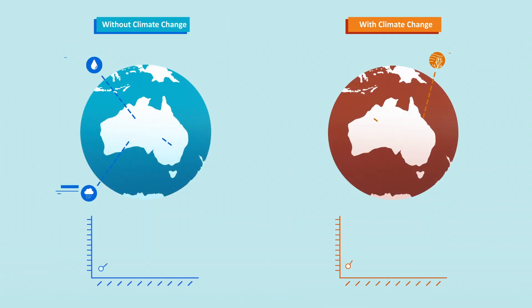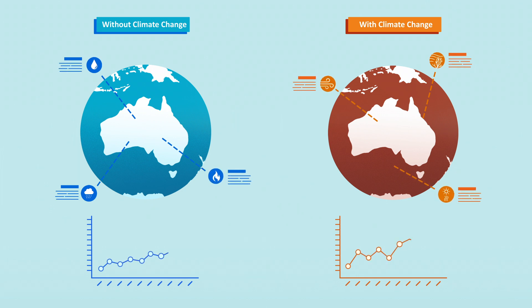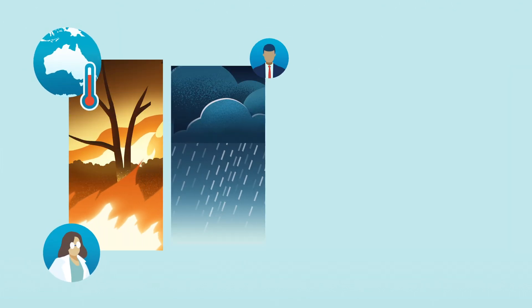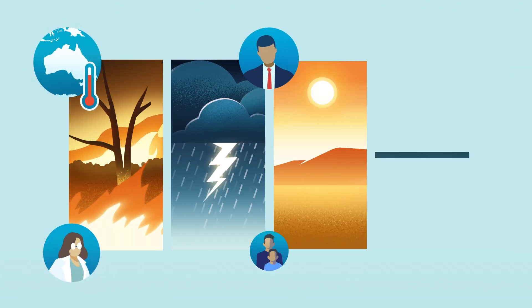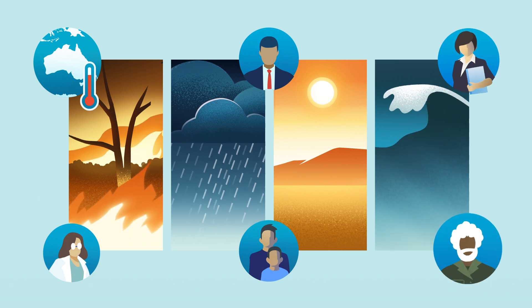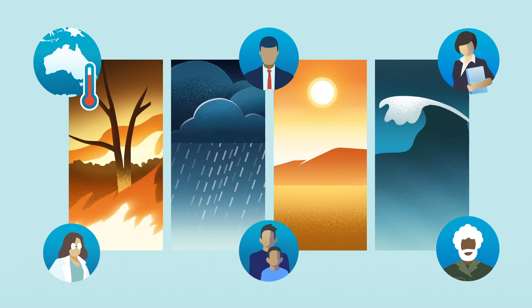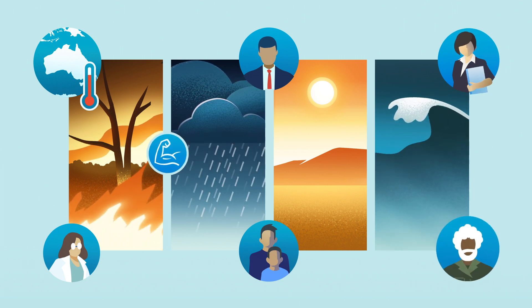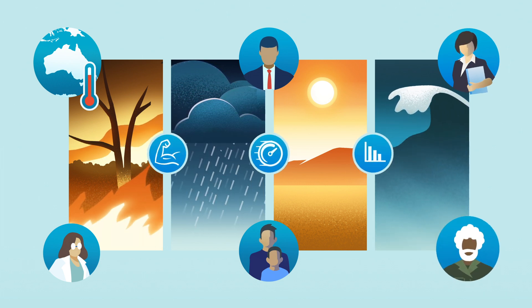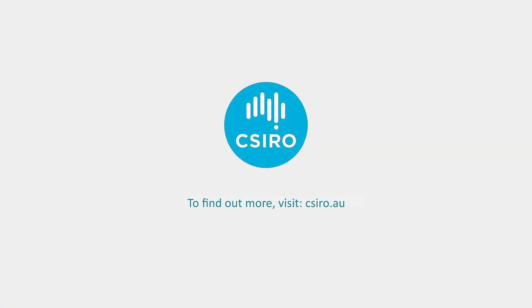Careful data analysis and scientific modelling can reveal the current impacts of climate change and predict future trends. By understanding and attributing the role climate change plays, we can improve how we respond, increase our resilience and reduce future impacts. To find out more, visit CSIRO.au.